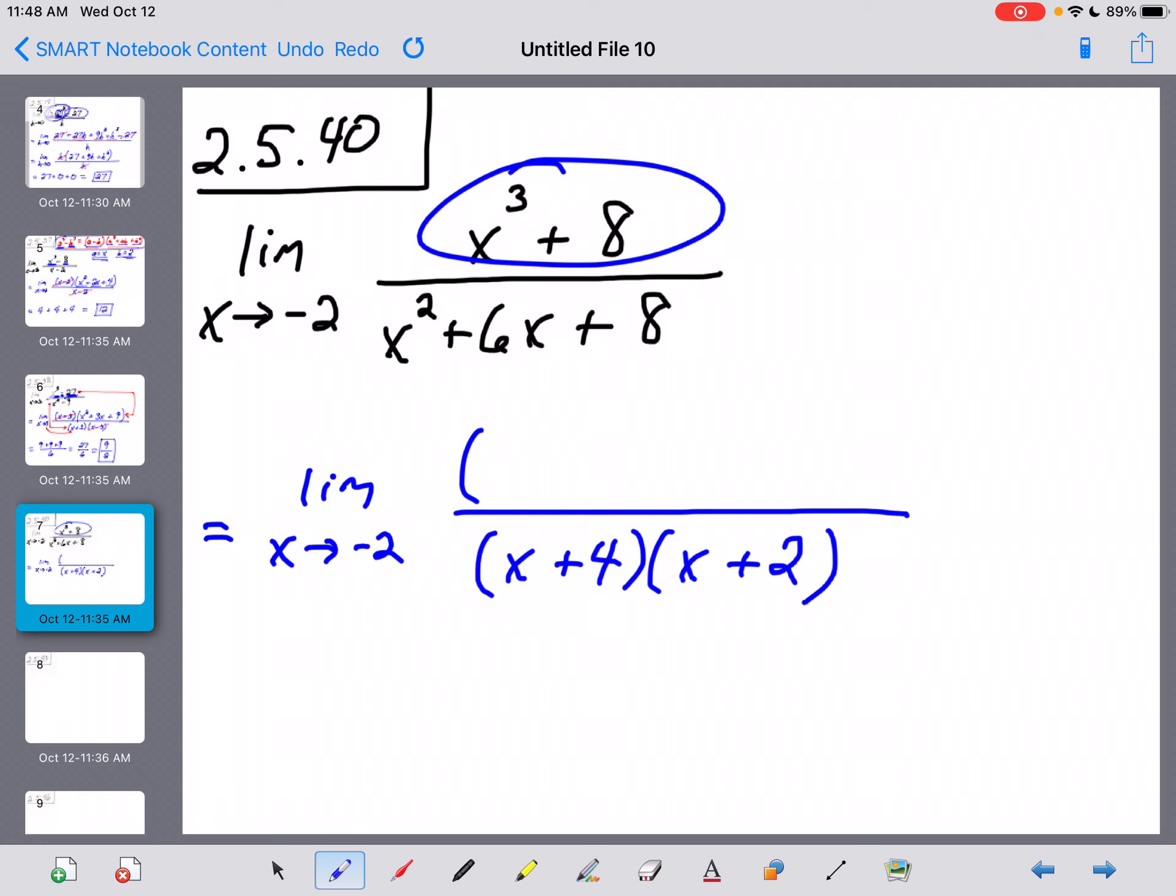It starts off just the way a difference of cubes did with a binomial, and it begins with the cube root of your first term, which is going to be x. And just like I said in the previous video, whatever this sign is right here, that's the sign that comes down here next.